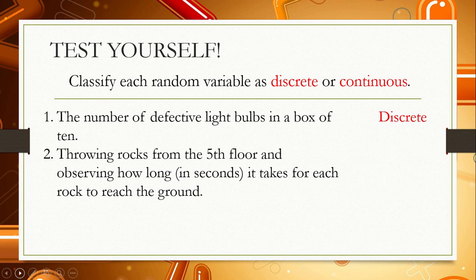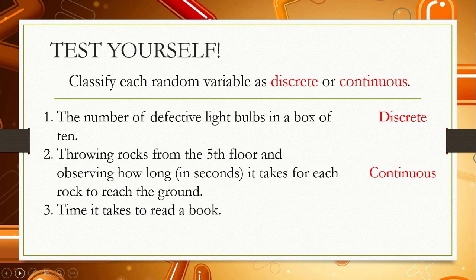Number 2: throwing rocks from the 5th floor and observing how long, in seconds, it takes for each rock to reach the ground. This is a continuous random variable because you will measure how many seconds it takes for the rocks to fall. Number 3: the time it takes to read a book. This is also a continuous random variable because you will measure the time a person reads a book.